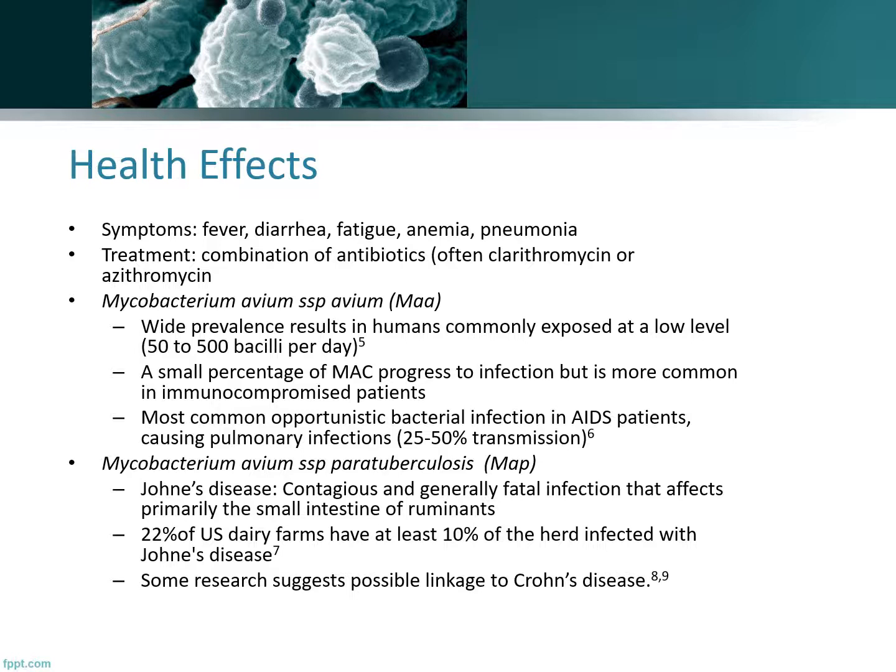You've got Johne's disease, which is a contagious, chronic, and usually fatal infection that affects primarily the small intestine of ruminants around the world. Signs are rarely evident until two or more years after the initial infection, which usually occurs shortly after birth. Newborns most often become infected by swallowing small amounts of infected manure from the birthing environment or udder of the mother, but can also be infected in the uterus or by swallowing bacteria passed in milk. A national study of U.S. dairies found that approximately 22% of U.S. dairy farms have at least 10% of the herd infected with Johne's disease.